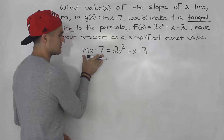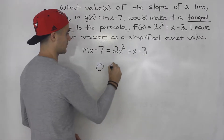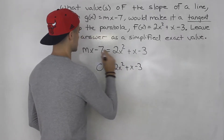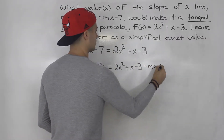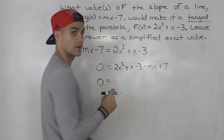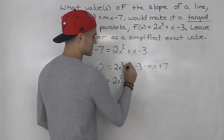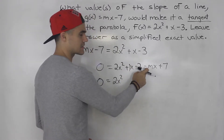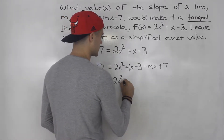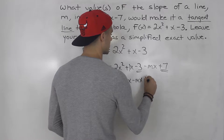So we take these expressions and bring them over, leaving zero on the left side. We'll have 0 = 2x² + x − 3 − mx + 7. Then we collect like terms and simplify: we get 2x², and then the x and −mx terms combine since 1 is in front of x. The constants −3 and +7 give us +4.